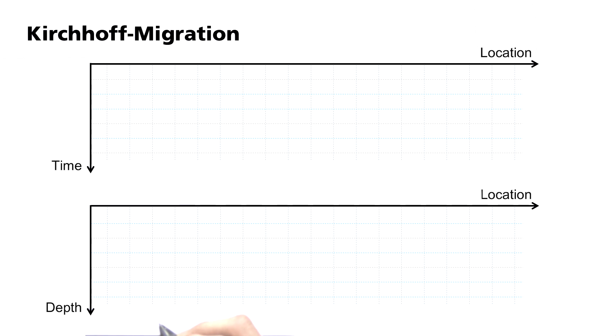I shall show you that here. If a seismic wave is reflected at a horizontal layer boundary, then according to Huygens' principle, an infinite number of spherical elementary waves are produced. Here I shall draw an example of three of them.